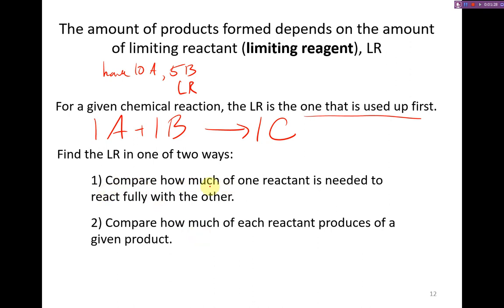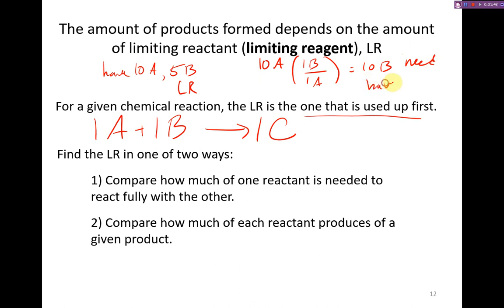The first way is to compare how much of one reactant is needed to fully react with the other. So if we say we use all of our A, and I need one B for every one A, I would need 10B. But we only have 5B, so it runs out. We don't have enough B so it runs out first.